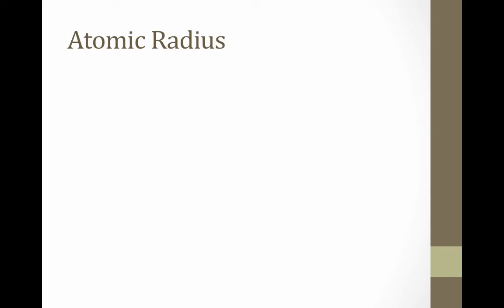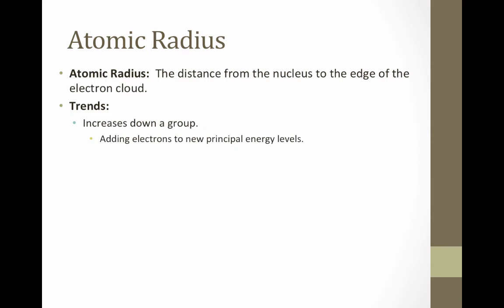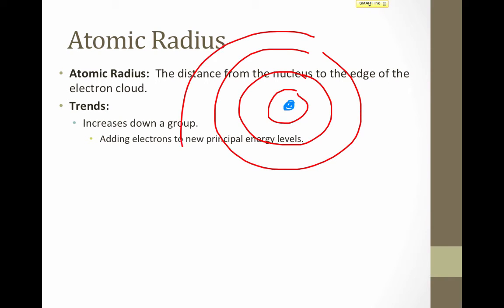The next property is atomic radius, which is the distance from the nucleus to the edge of the electron cloud. Atomic radius increases down a group. This is not surprising — recall that as we go down a group, each time we go from one element to the next we add a principal energy level, so the atom is literally getting larger and its radius is increasing.